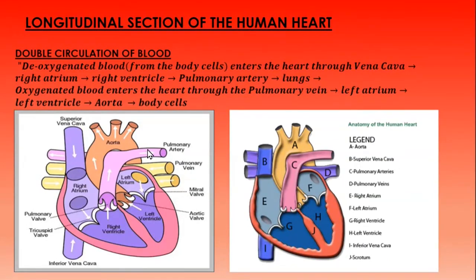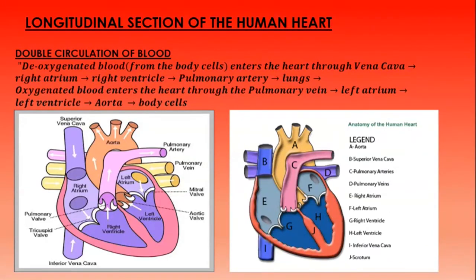Please learn the spelling of the parts. This diagram also helps you draw the heart using letters to represent the parts and then interpret their meaning on one side. Today we looked at the functions of the parts of the circulatory system and studied the double circulation of blood through the longitudinal section of the human heart.